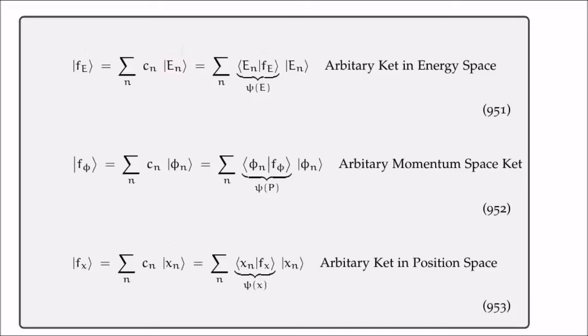And it's a Hermitian operator so we can take linear combinations of those to describe an arbitrary abstract quantum state living in energy Hilbert space, which I'm going to call ket f sub e. So here is how we take the linear combination of those. We know that these coefficients, these c sub n's, are actually the probability amplitudes and they can be expressed using this inner product notation.